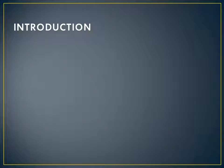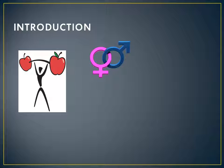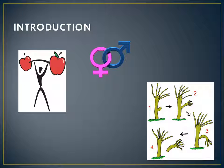Coming to the introduction — as you all know, living organisms require energy to carry out various metabolic activities. We get energy from the food we eat, and it is very important for our survival, as well as for the survival of plants and animals. All living organisms require energy, and this energy comes from the food we eat.